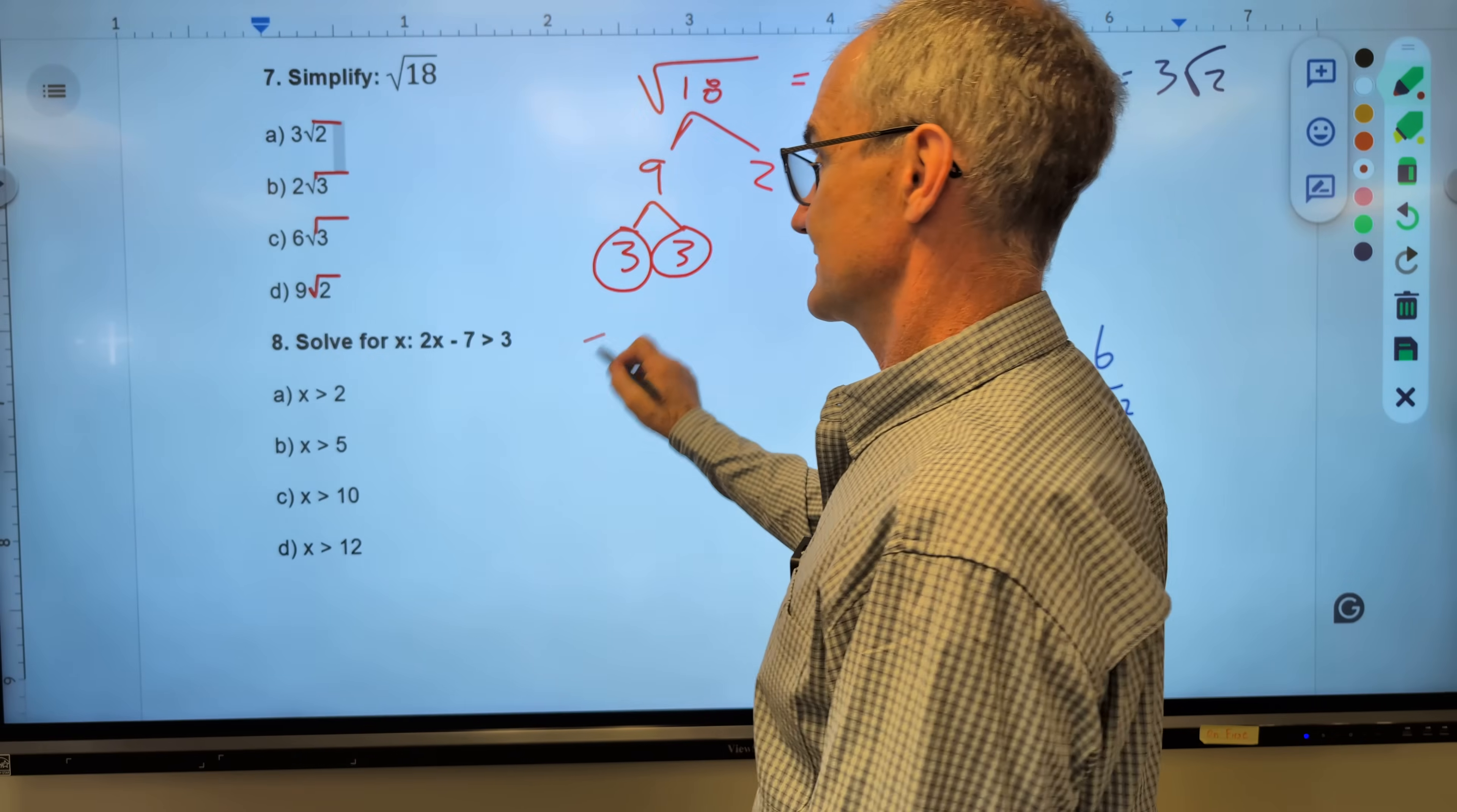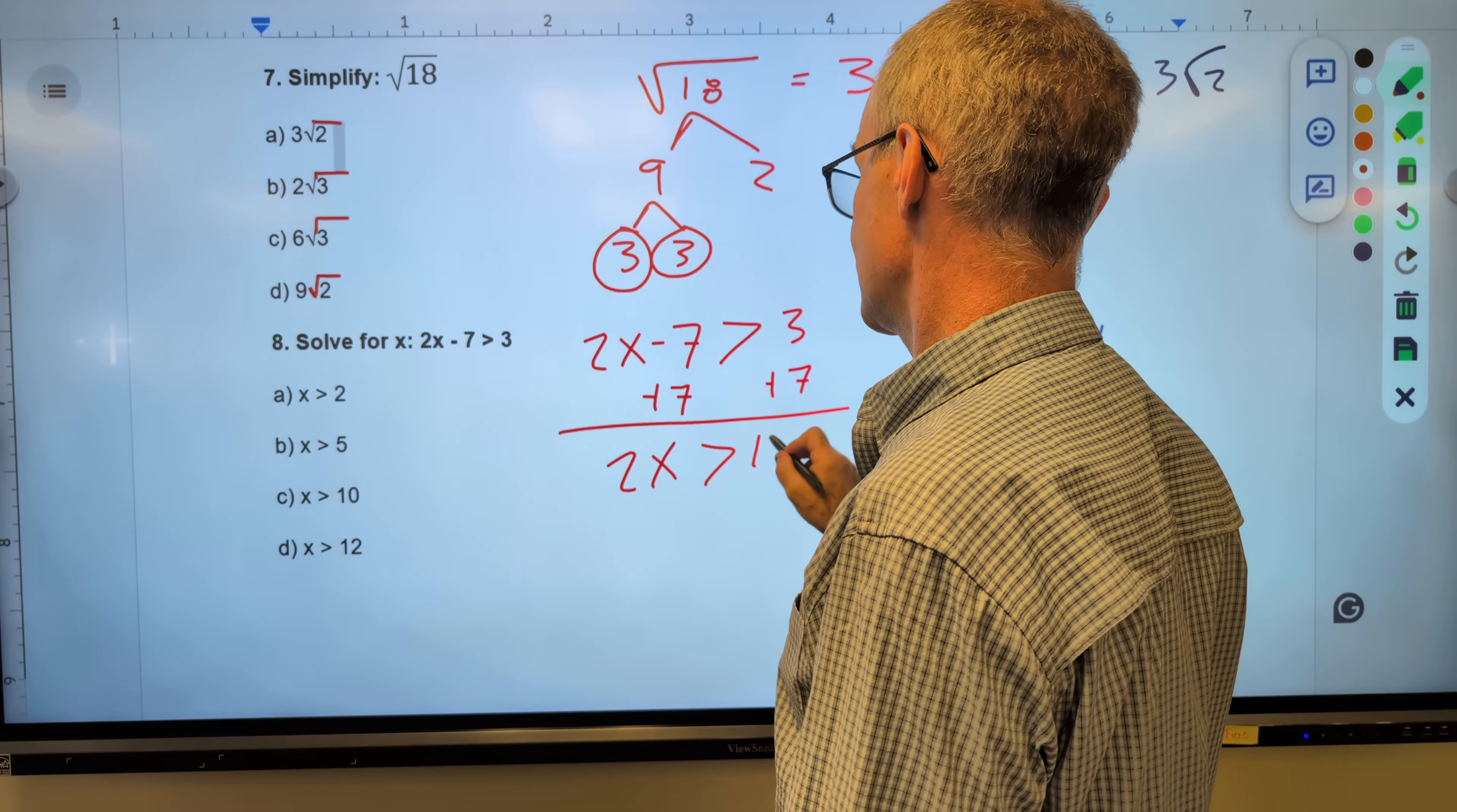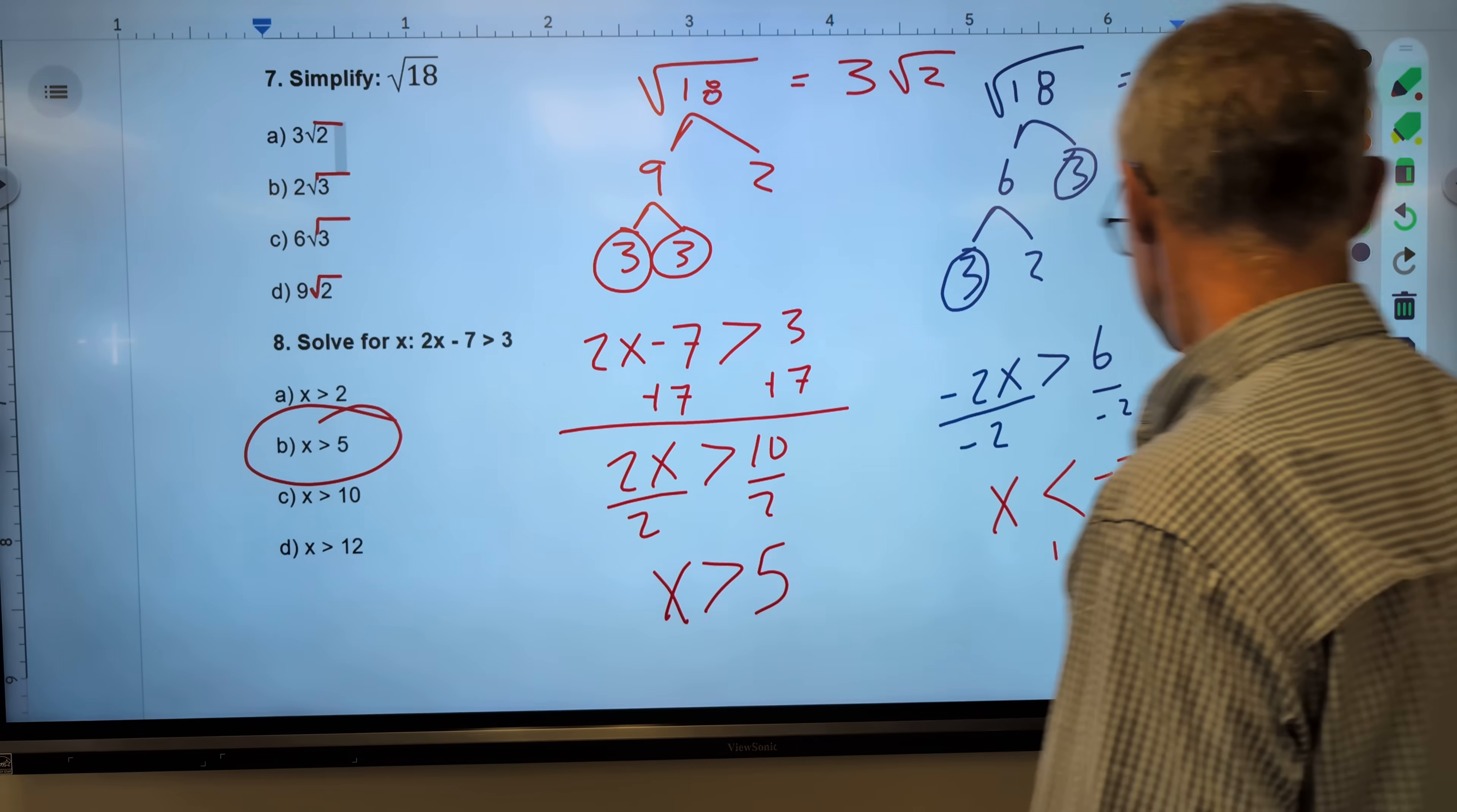So I'm going to treat this just like an equation. 2x minus 7 is greater than 3. Add 7 to both sides. These cancel. 2x is greater than 10. Divide by a positive 2. Does not change the sign. X is greater than 5. Correct answer, answer B right there.